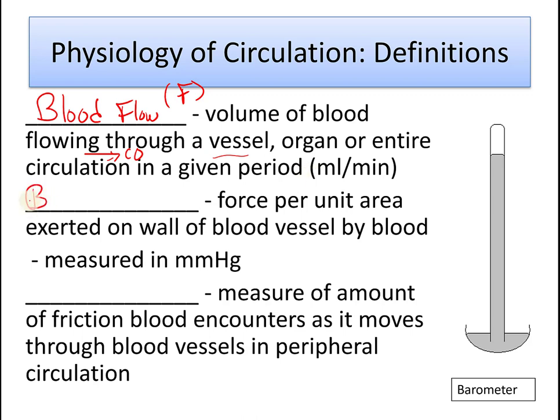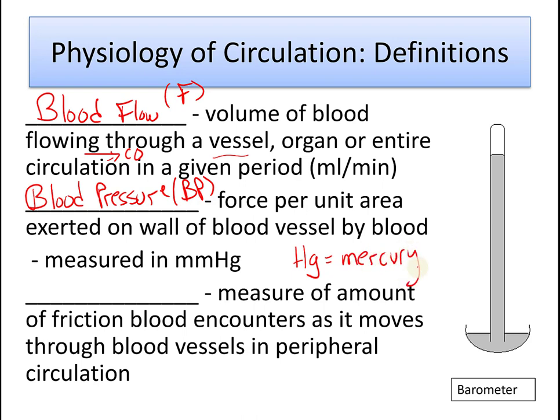Another term is blood pressure, abbreviated BP. Blood pressure is the force per unit area exerted on the wall of a blood vessel by blood. It's measured in millimeters of mercury. The reason for this is that long ago we used mercury in blood pressure cuffs, in sphygmomanometers, and also in barometers.